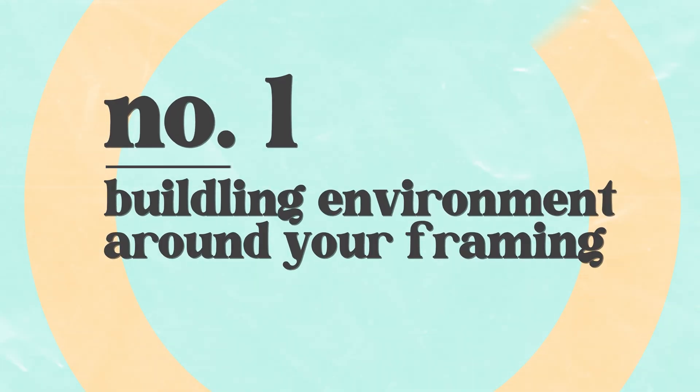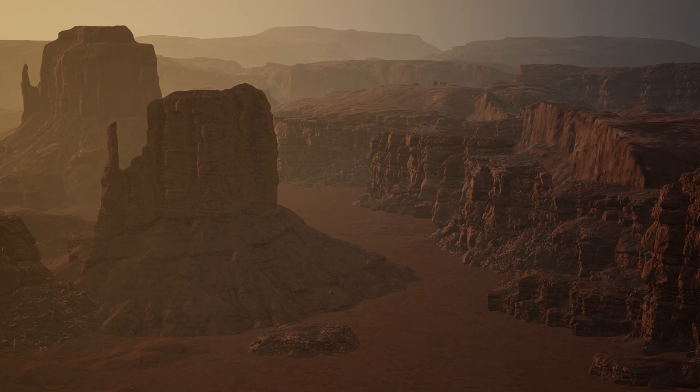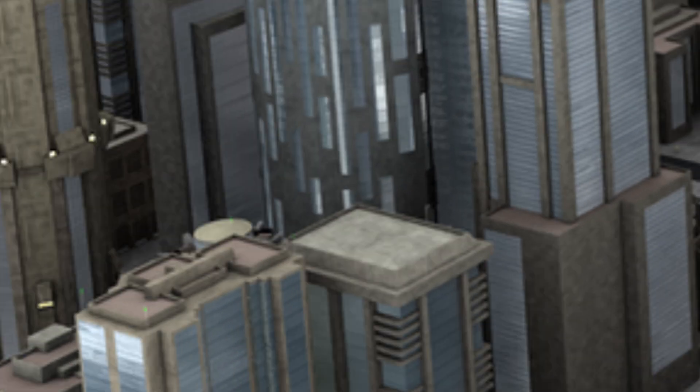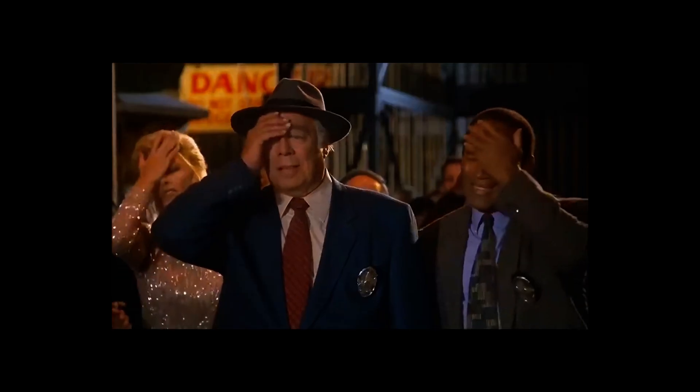Number one: building your environment around your framing. One of the most important principles in video is placing the camera down and seeing the frame, so we can dress and light around it. You don't want to overpopulate parts of your environment that are never going to be seen. Building everything is unnecessary. To make your project shine, you're going to need to optimize your work. Be efficient, know the shots in the storyboard, and build your scene.